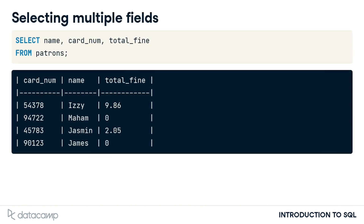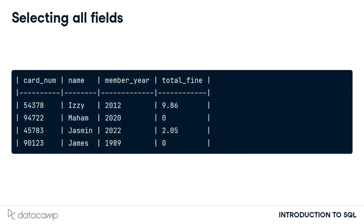As you might expect, we can select three fields such as name, card num, and total fine by listing all three field names after the SELECT keyword and separating them with commas. What if we'd like to select all four fields in the patrons table? We could list out the four field names after the SELECT statement, but there's an even easier way. We can tell SQL to select all fields using an asterisk in place of the four field names.